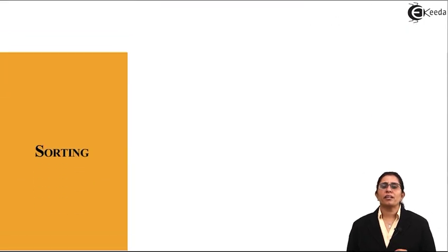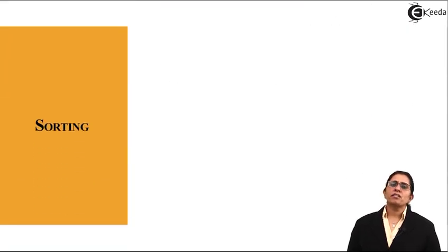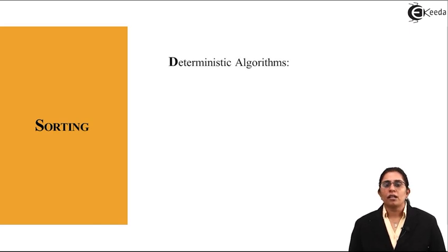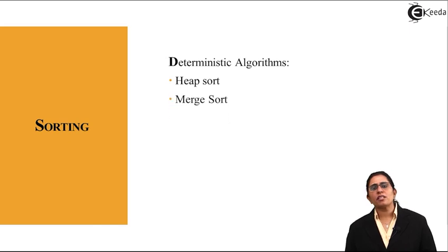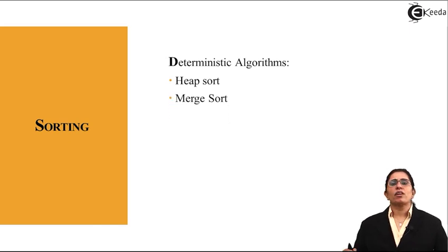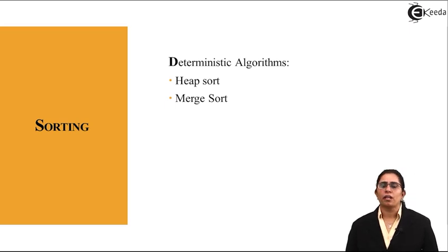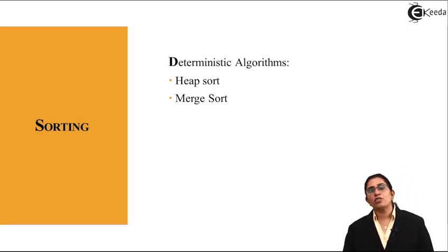Now let's take an example for sorting. Deterministic algorithms for sorting are the heap sort and the merge sort. In heap sort where I have a list of numbers, I create a normal heap of sorting, and in merge sort I use divide and conquer.